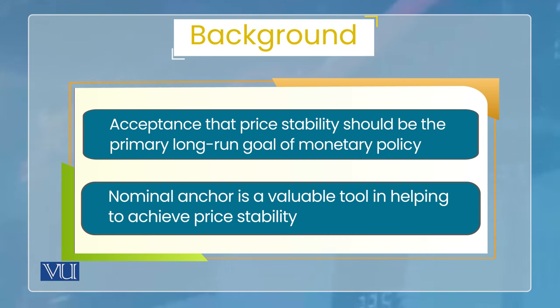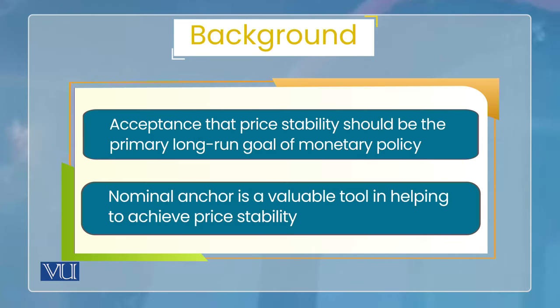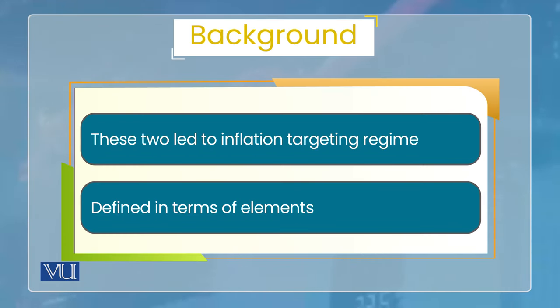دو چیزیں ہم پہلے پڑھ چکے ہیں: ایک یہ کہ long run میں price stability ہی prime goal ہوتا ہے monetary policy کا اور long run میں کسی اور objective کا اس سے کوئی clash نہیں آتا۔ دوسرا یہ کہ جو nominal anchor ہوتا ہے اس سے inflationary expectations anchor ہوتی ہیں اور price stability ensure کرنے میں help ملتی ہے۔ یہ دونوں چیزیں inflation targeting strategy کے اندر موجود ہیں۔